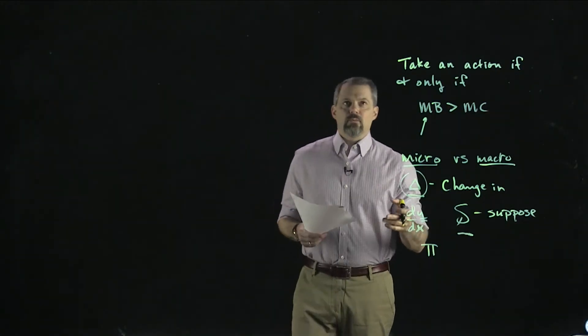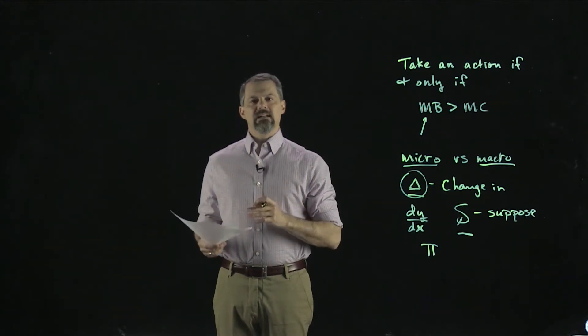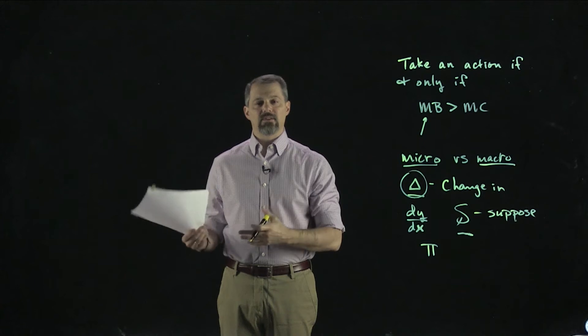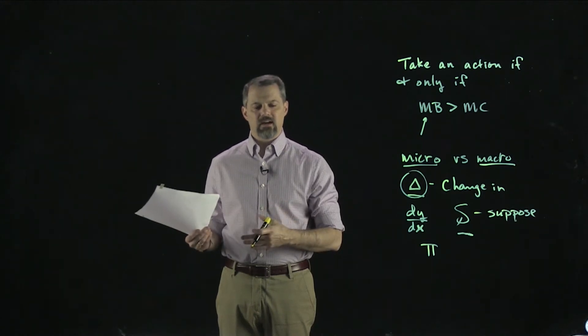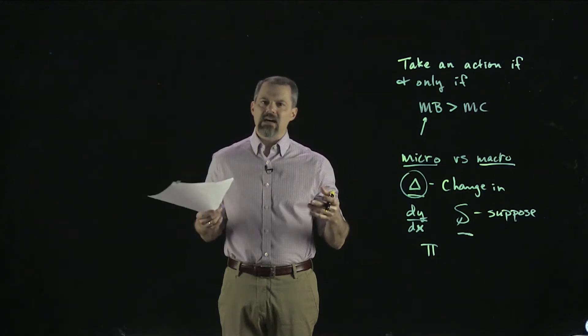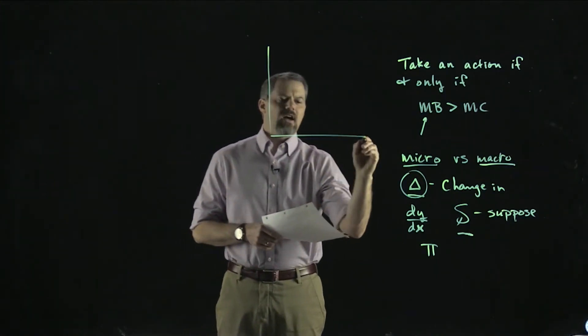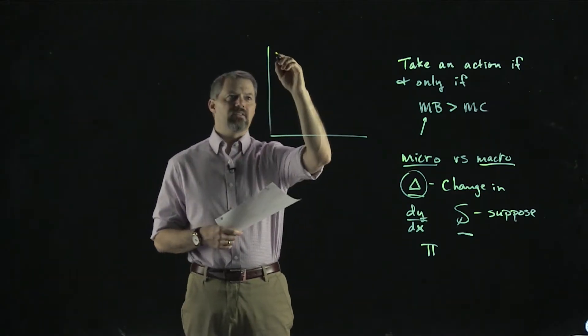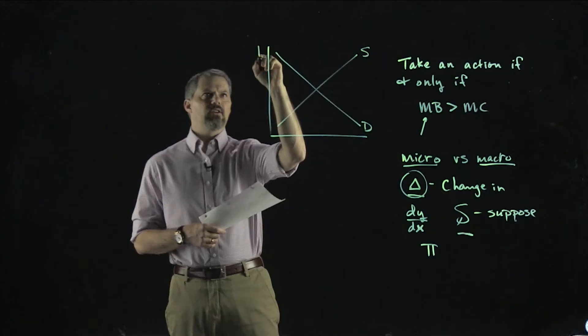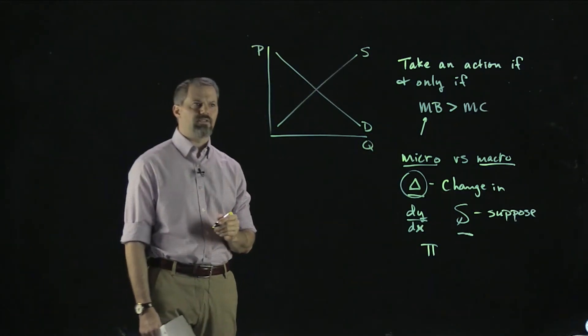One of the things we do in an intermediate micro course is we take the theory you learn in a principles of microeconomics course and we essentially work through some of the math of it. In a principles class, you would have thought a lot about the demand and supply model. We've got a demand curve and a supply curve.